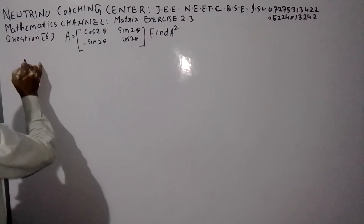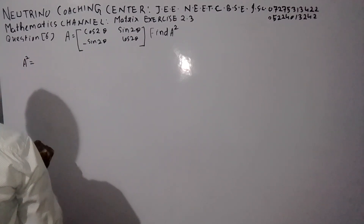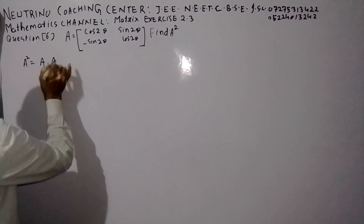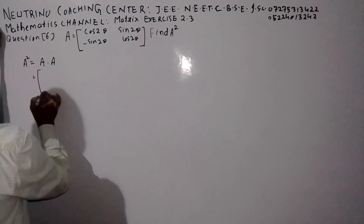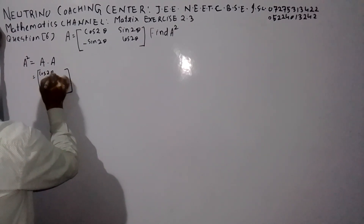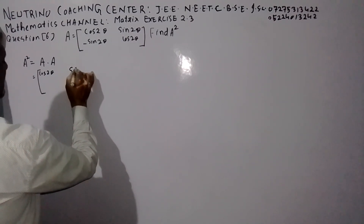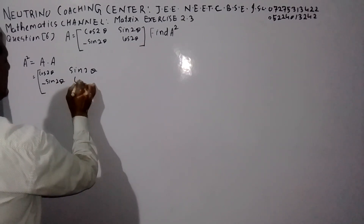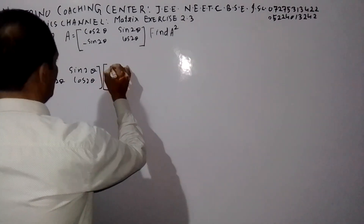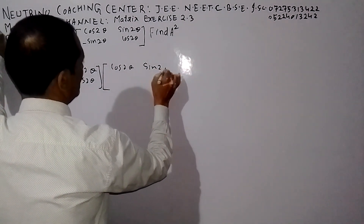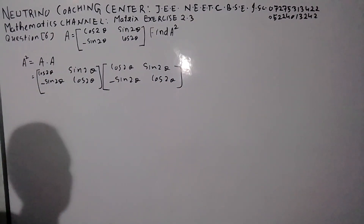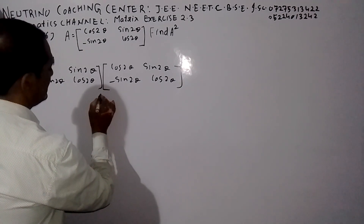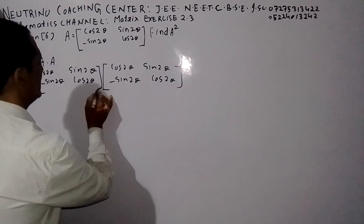So, we need to find the square of this matrix. It is the power of the square matrix. Now the multiplication is set up. The number of columns of the pre-matrix must equal the number of rows of the post-matrix. This order is 2 by 2.